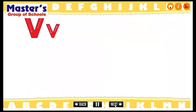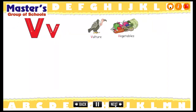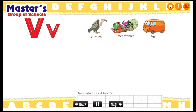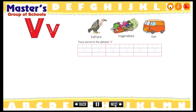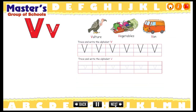V for vulture. V for vegetables. V for van. Trace and write the alphabet. Capital V. Trace and write the alphabet. Small v.